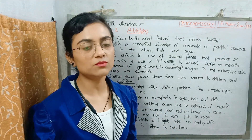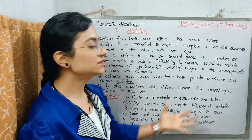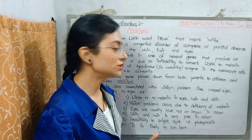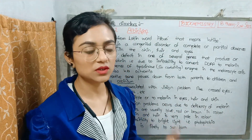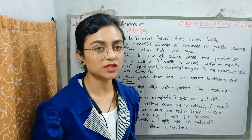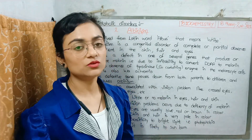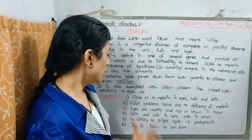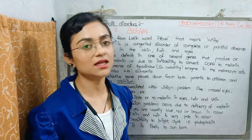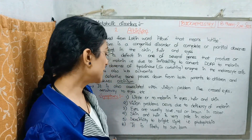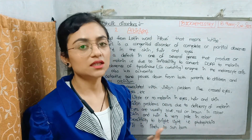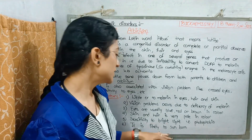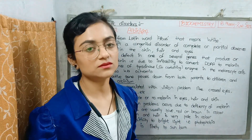In albinism, there is a problem with vision, including crossed eyes, and the eyes are more sensitive. The symptoms include: reduced or absent pigment in eyes, hair, and skin; vision problems due to deficiency of melanin; eye color may appear blue, red, or brown; skin and hair are very pale and dull. There is also high sensitivity to bright light, causing photophobia — these people cannot tolerate bright sunlight. They are also more likely to get sunburned.